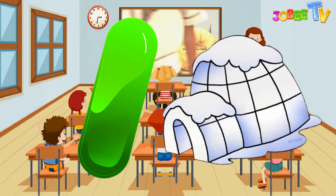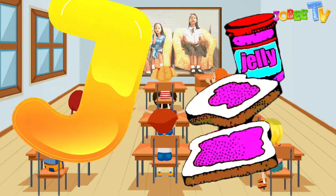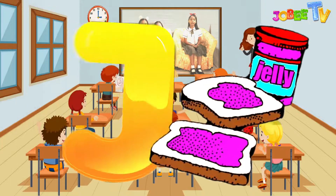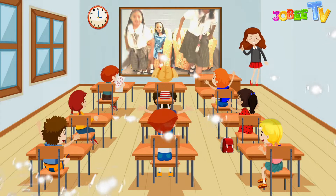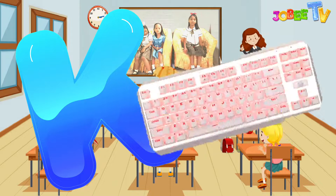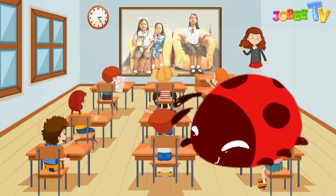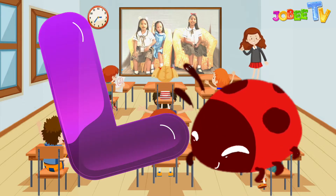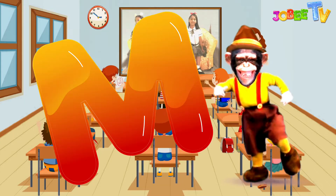I-I-igloo, I-I-igloo, I-igloo. J is for jelly, J-J-jelly, J-J-jelly, J-jelly. K is for keyboard, K-K-keyboard, K-K-keyboard, K-keyboard. L is for ladybug, L-L-ladybug, L-L-ladybug, L-ladybug. M is for monkey, M-M-monkey.